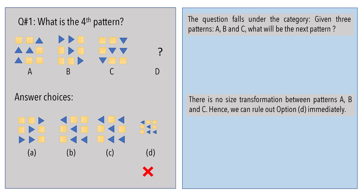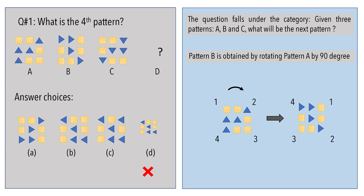From A to B and from B to C, there is no change in overall size of the pattern. So, let us rule out option D as an answer. Let us try rotating pattern A — name the four ends of the pattern as 1, 2, 3 and 4 as shown. Now apply a 90-degree rotation.